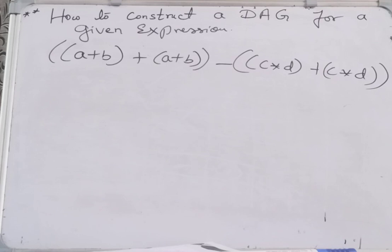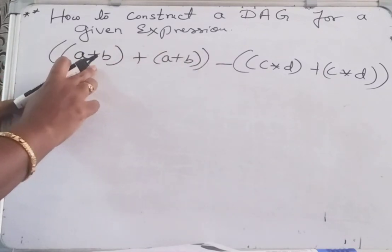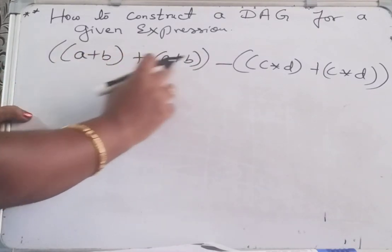Now how to construct the DAG for this expression. So first here we have A plus B, A plus B plus A plus B.